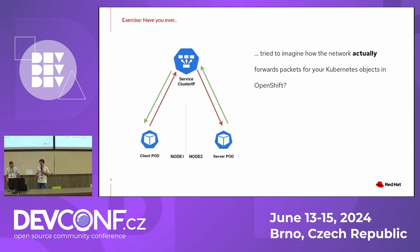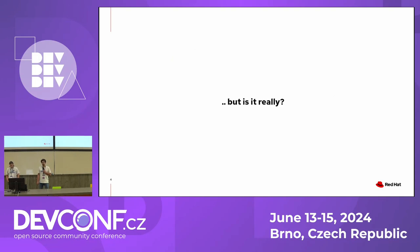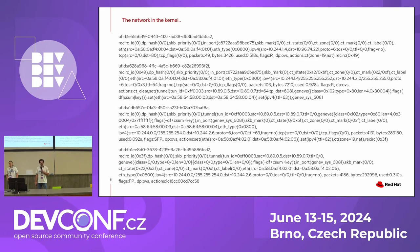Have you ever tried to imagine how the network actually forwards packets for your service in OpenShift? It seems straightforward, right? There's probably some forwarding rules here and there — routes, policies, whatever. Maybe some load balancing to select the service endpoints that is going to service the traffic. And now the question is, is it really like that? Well, in practice, if you look at the kernel, it's this.